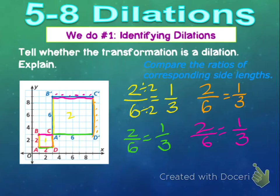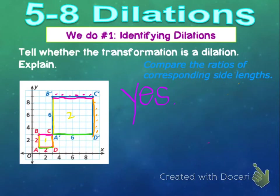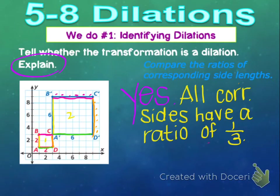So is this a dilation? Yes, it is. And if it asks you to explain — which this one does — you would say that all corresponding side lengths have a ratio of one-third. That is how you figure it out.